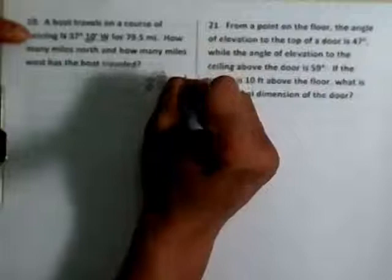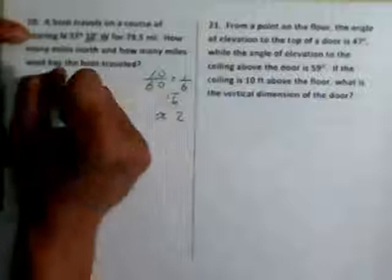Number 19. A boat travels on a course bearing north 37 degrees 10 minutes. To change the 10 minutes into degrees, just go 10 divided by 60, which equals 1 over 6. I know 1 over 6 is 0.16 repeating, which is approximately 0.2. So it's going to go north 37.2 degrees west for 79.5 miles. Notice that the boat, it's going to be on water, which means we're going to use bearing of course.